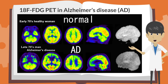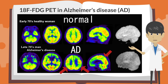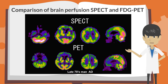In Alzheimer's disease, the most common cause of dementia, glucose metabolism PET is more useful than brain perfusion SPECT. Compared to healthy elderly, Alzheimer's disease shows hypometabolism in bilateral parietal cortex and posterior cingulate gyrus to precuneus, as indicated by arrows. Due to the difference in spatial resolution, the hypoperfusion in SPECT is less distinct than the hypometabolism in PET, but the accumulation pattern is similar in SPECT and PET.